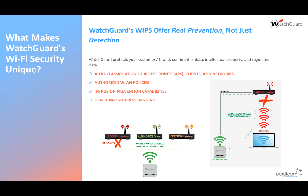Device MAC address banning is also there — we can identify common MAC addresses coming through, and while we appreciate MAC addresses can be spoofed, there are only so many they can spoof that we can identify. Smarter device recognition lets us identify whether it's a mobile phone or a laptop and apply different rules. And BYOD policy enforcement means if a user brings their own device, we force them through a different portal and eventually put them on a different SSID.